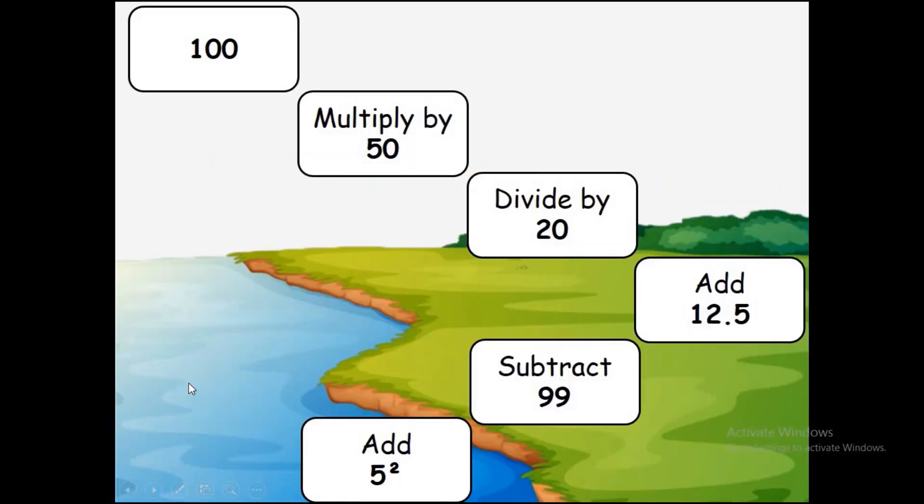What I'm going to ask you to do is start at the top, start with 100. Then what you're going to do, you're going to multiply it by 50. Once you've done that, whatever answer you get - so 100 times 50, whatever your answer is - you then have to divide it by 20, which is here.